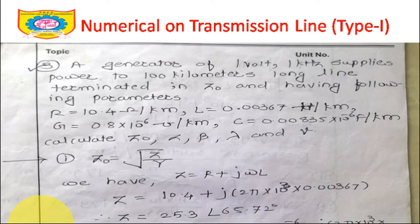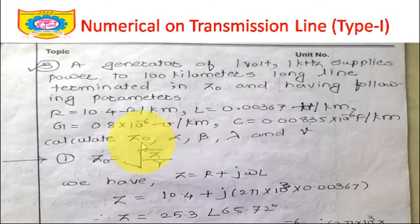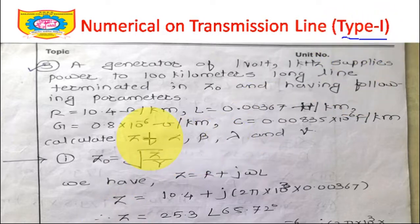There are two types of numericals which can be asked: Type 1 and Type 2. First, understand what primary constants and secondary constants are. Primary constants are R, L, G, and C. Secondary constants are Z0, gamma (which includes alpha and beta), lambda, and V. If primary constants are given and secondary constants are asked, that is a Type 1 problem. If secondary constants are given and primary constants are asked, that is a Type 2 problem. We will see both types.